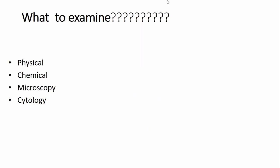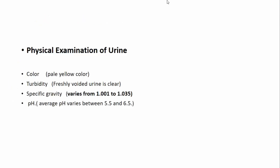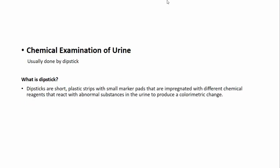After collection, there are certain properties to examine in a urine sample: physical properties, chemical properties, microscopy, and cytology if needed. In physical examination, the color is usually pale yellow, fresh urine has no turbidity, specific gravity ranges between 1.010 to 1.035, and pH is between 5.5 and 6.5.